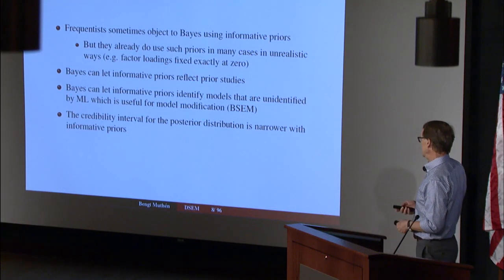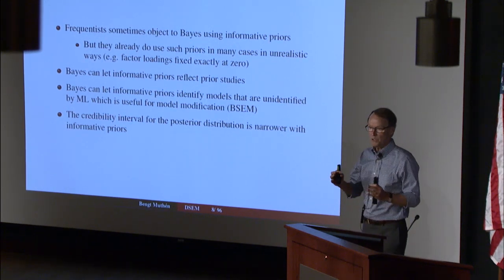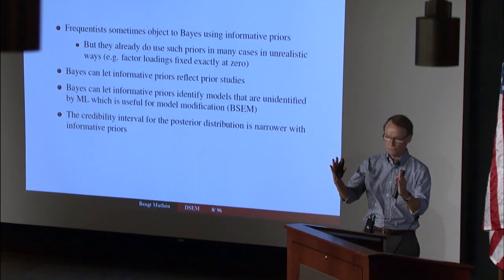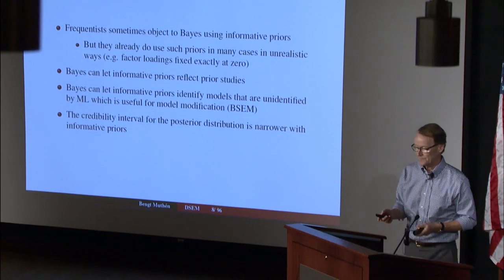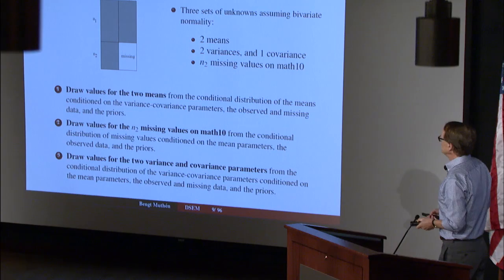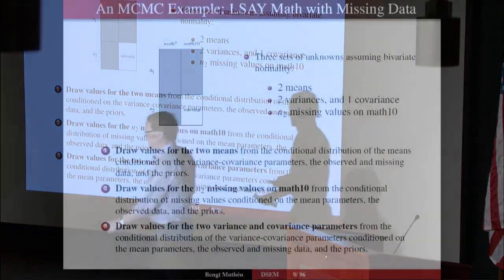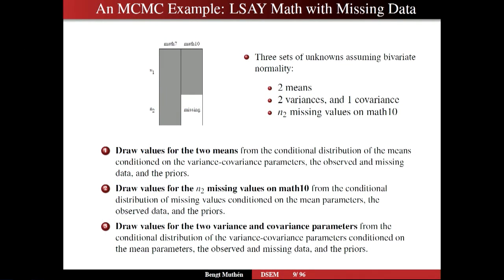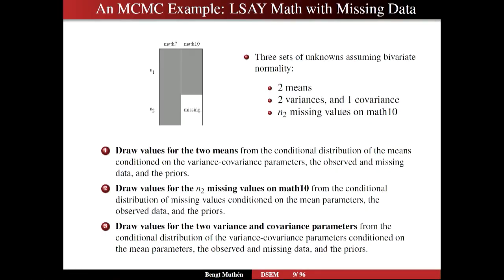The advantage of posterior distributions with informative priors is that the credibility interval — the Bayesian confidence interval — is shorter. You have more precise statements. Let's take an example to get you into this analysis.